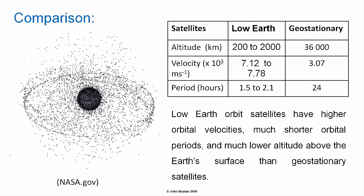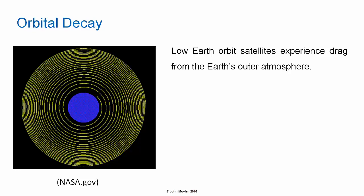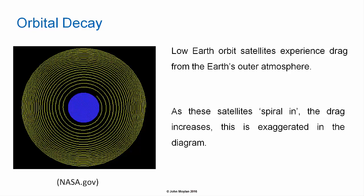Low Earth orbit satellites therefore have higher orbital velocities, much shorter orbital periods, and much lower altitude than geostationary satellites. LEO satellites also experience drag from the Earth's outer atmosphere, causing orbital decay. As these satellites spiral inward, drag increases — as shown in this NASA diagram, the spiral becomes steeper as the satellite gets closer to the Earth. The scale is exaggerated but the representation is otherwise accurate.